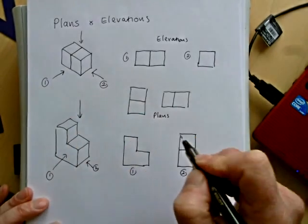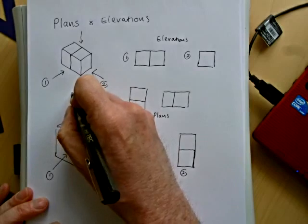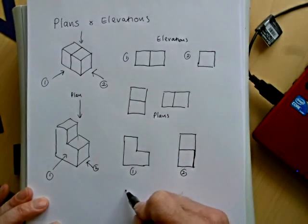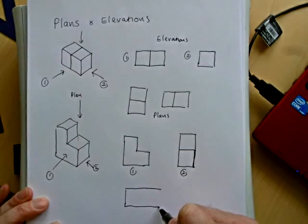And again, if we look down from above our plan, then we won't see the depth. And we'll simply see the two cubes like this.